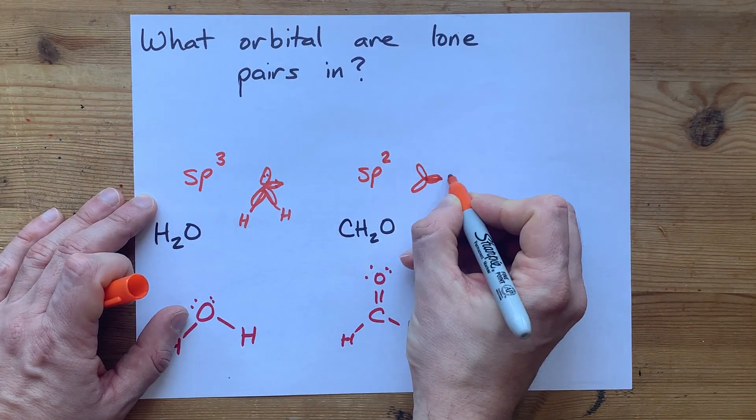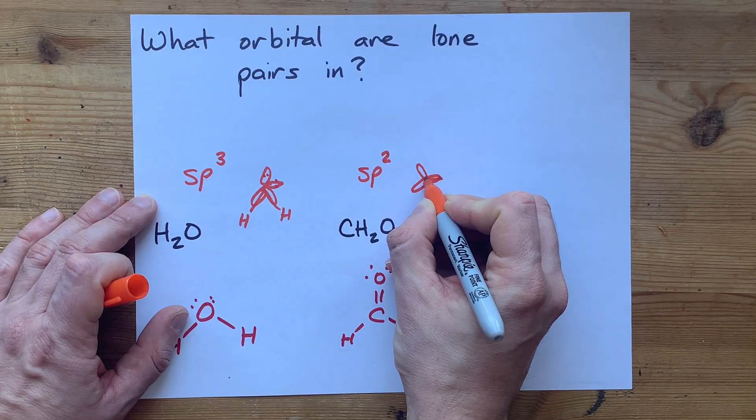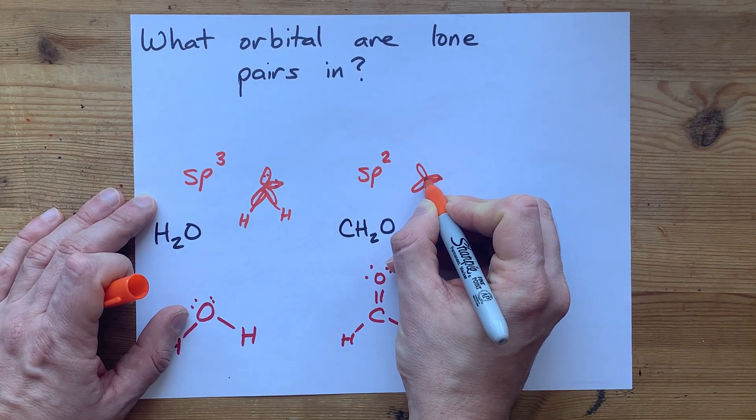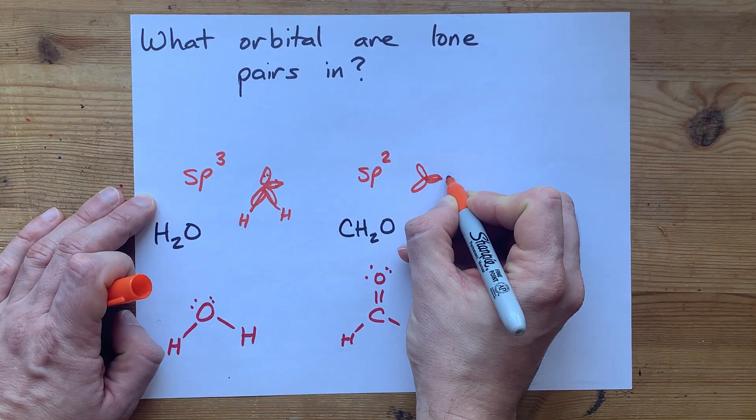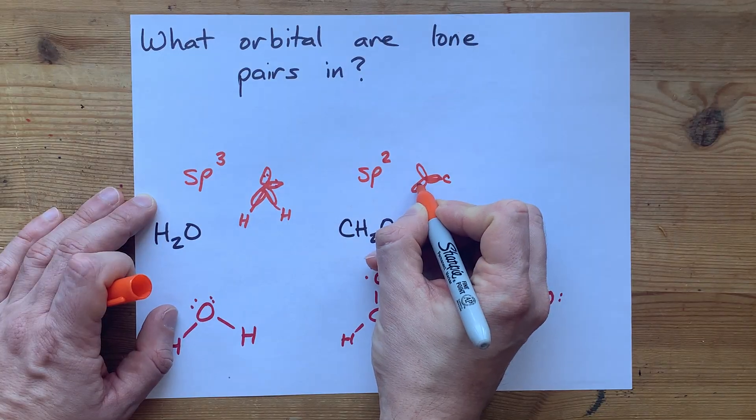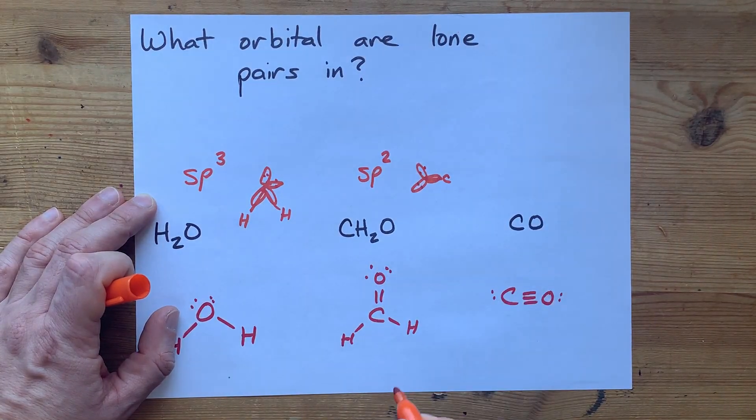So if I draw myself a trigonal planar arrangement here, one of these is a sigma bond. Well, this is the oxygen here. It's the oxygen that's sp2 hybridized. One of those hybrid orbitals gives you a sigma bond to the carbon. Another one holds a lone pair, and another one holds a lone pair.